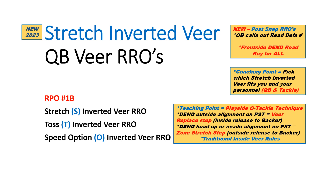If the defensive end aligns outside of the play side tackle, he's going to do what we call a veer replace step — stepping with his inside foot first but getting straight up field to the first backer head up or inside. If the defensive end is head up or with a line inside shade, that play side tackle is going to take a zone stretch set, outside releasing like he would for stretch zone, again looking for the first backer head up to inside.